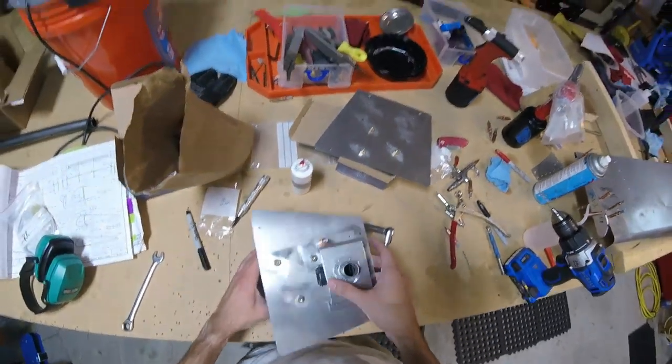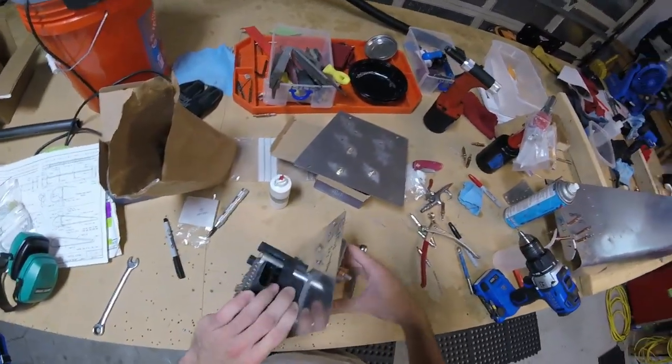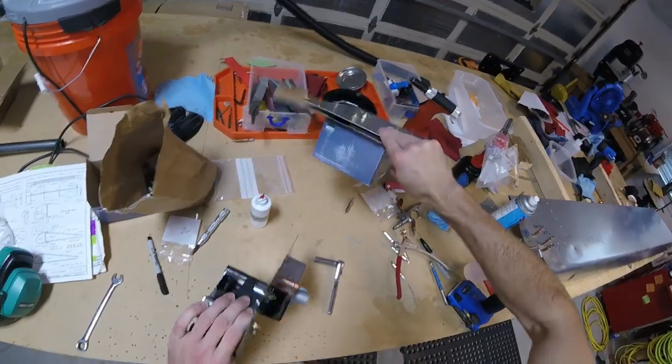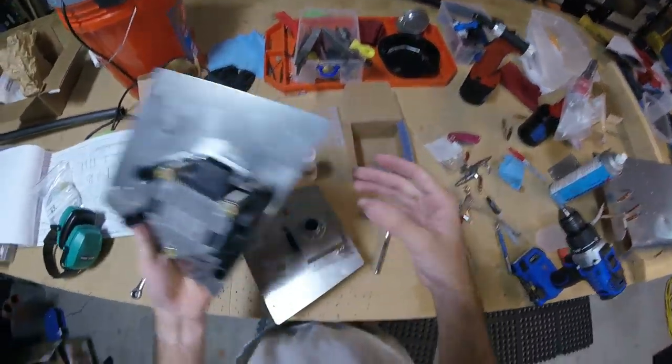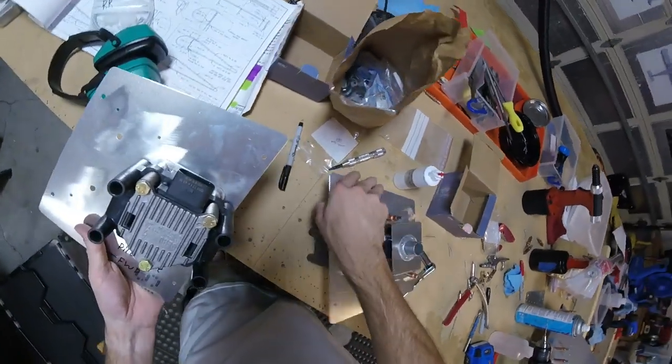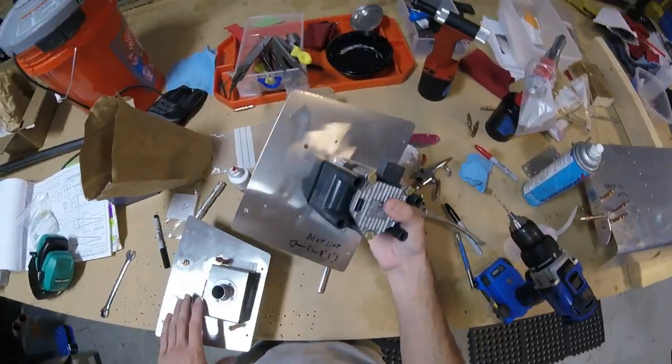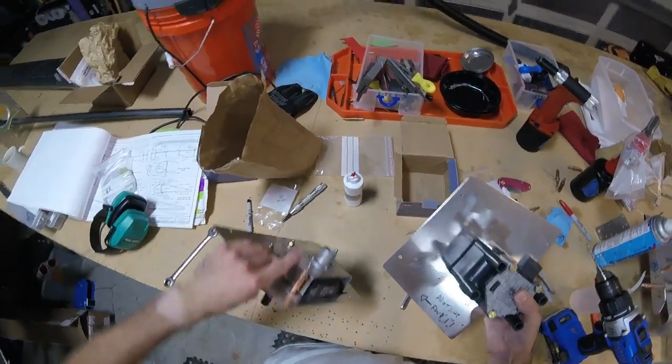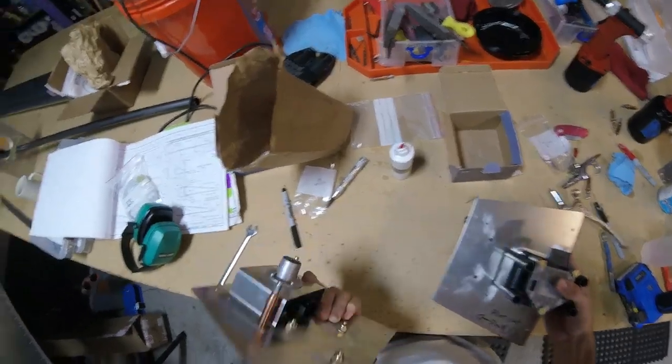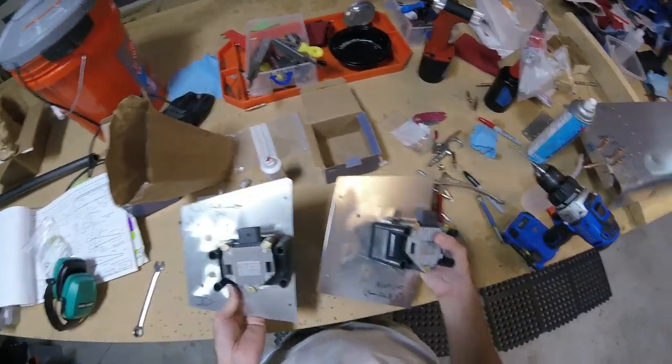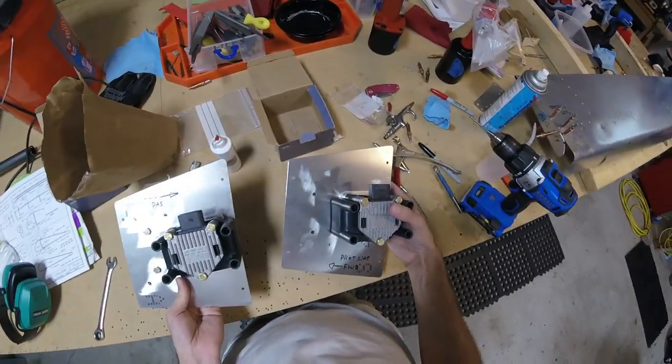That does it for the panels with the ignition coils. We've got the pilot side and the passenger side. Yeah, okay. I thought I got it backwards again. Wait.